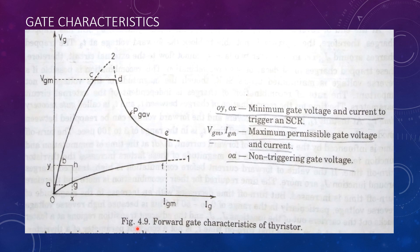Figure shows the forward gate characteristics of a thyristor. The forward gate characteristics of a thyristor is spread between two curves, curve 1 as shown over here and curve 2 as shown over here.